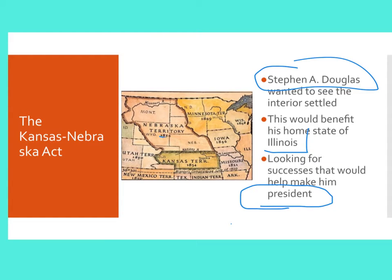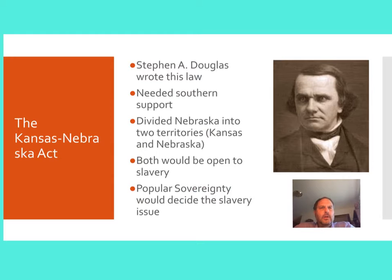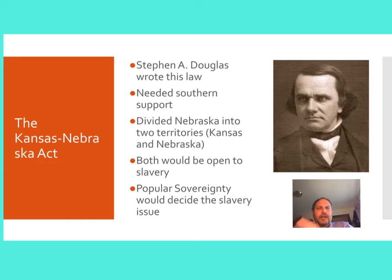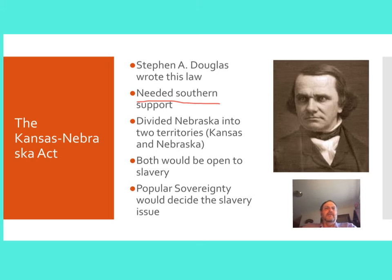So here is the Nebraska Territory, and there's the Kansas Territory. If you want to become the president of the United States, you need to get support from all parts of the country. The way Douglas was going to get support from all parts of the country was through his Kansas-Nebraska Act. He was in particular looking to get southern support. After all, Illinois is a northern state, so he needed some support from the southern states if he was going to get himself into the White House.